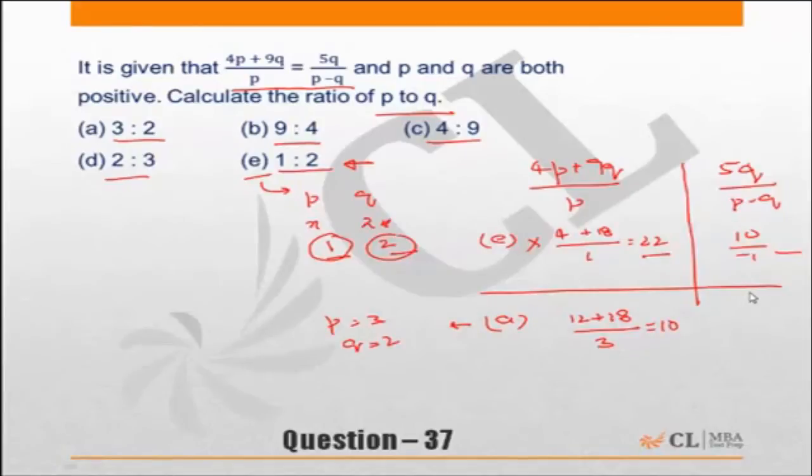The right hand side becomes 5q, 5 into 2 is 10, upon 3 minus 2 which is 1, equals 10. Both of them tally. Hence the correct answer is choice a.